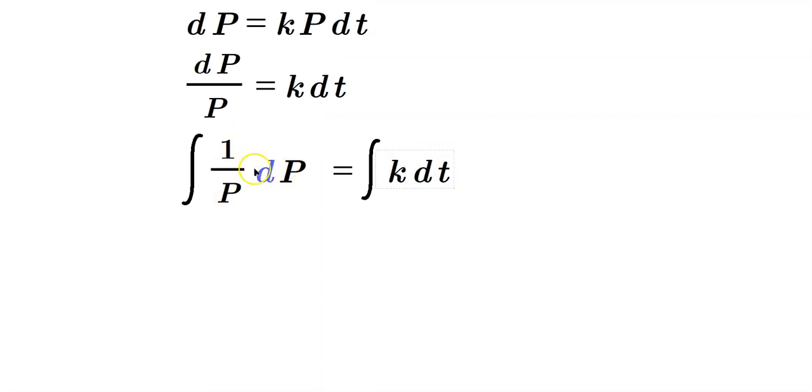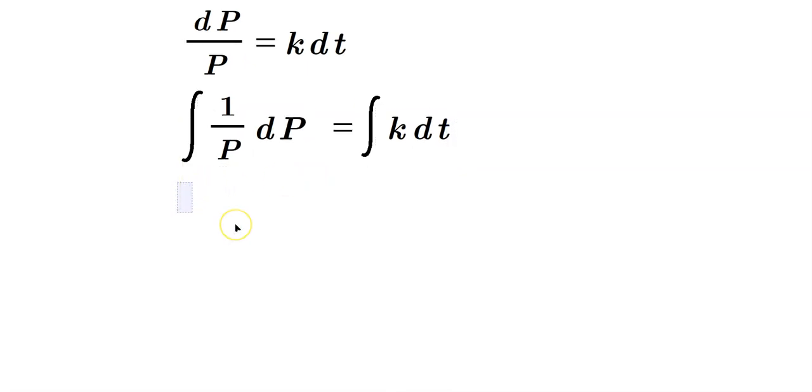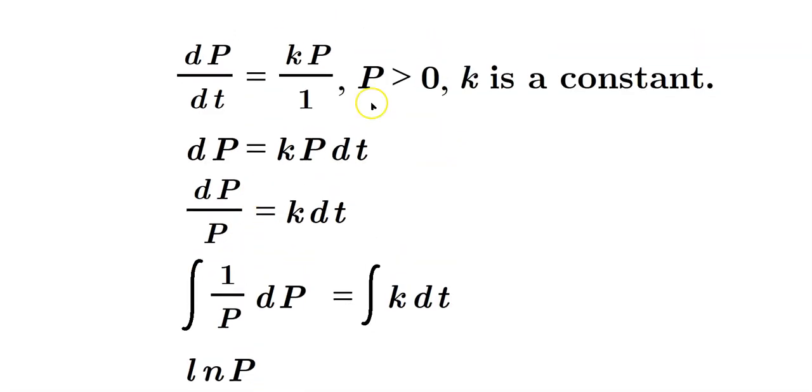Notice on the left side, I separated the 1 over P away from the dP. Why would I do that? Because we can observe that 1 over P anti-differentiated is just ln of P. We can use the ln rule as an anti-derivative. Notice I don't need absolute value bars because the assumption is that P is greater than 0 already.